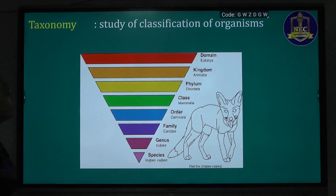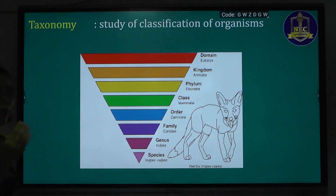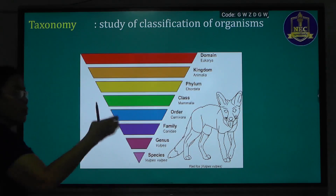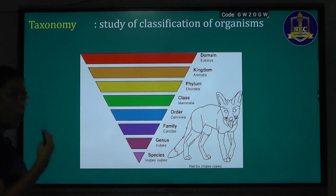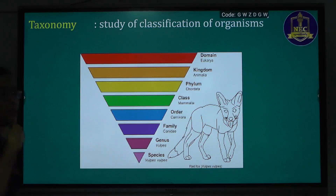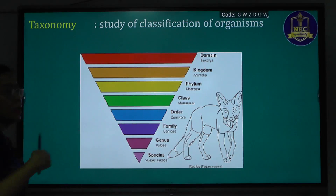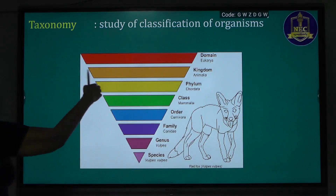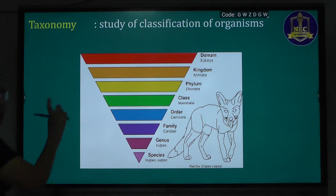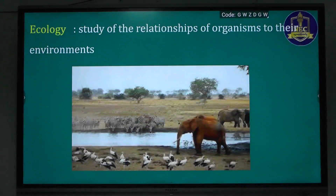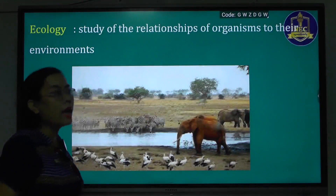Taxonomy is the classification of organisms. If you understand classification, you will know how to categorize living things. Ecology is a major branch that studies the relationships of organisms to their environments, including animals, plants, and humans interacting within ecosystems.